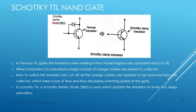In Schottky TTL, we don't allow the transistor to go into deep saturation. The charge carriers stored in the collector are comparatively reduced, which means the switching speed of the transistor increases. This transistor is represented with a special symbol — it is called a Schottky clamp transistor.